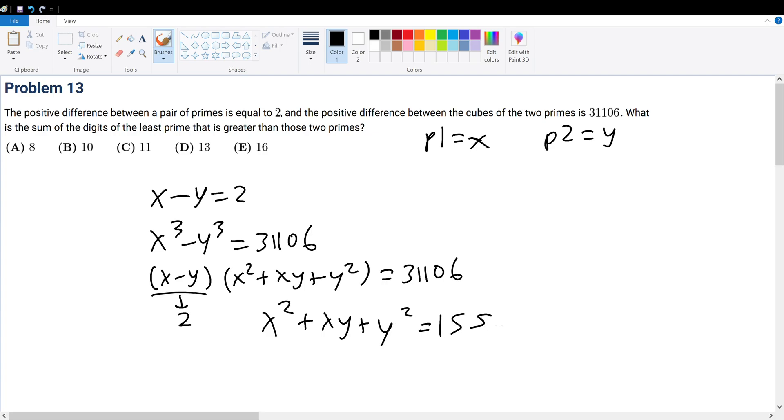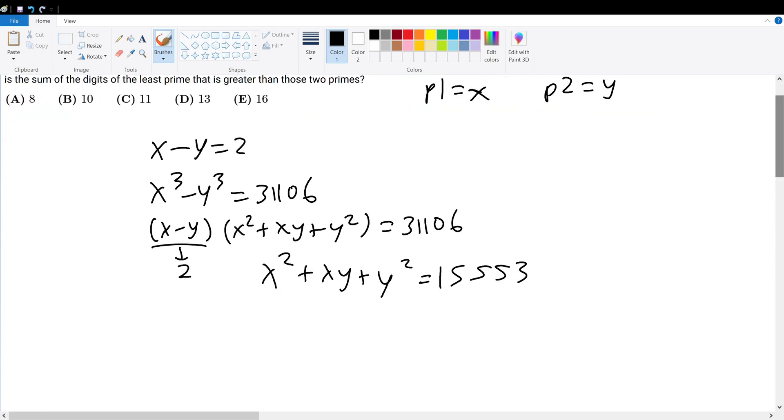I don't like that there are two variables, but I can relate x and y together from the first equation where x equals 2 plus y. If I substitute x for this term for every occurrence of x, then I get the equation.